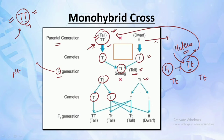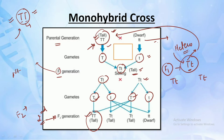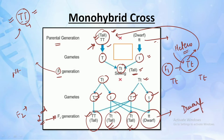When we self capital T small t, the gametes formed would be either capital T or small t from each parent. So in the F2 or second filial generation, we have the following combinations: capital T capital T (tall), capital T small t (tall), capital T small t (tall), and small t small t. Because small t small t is homozygous for the recessive character, it would represent the dwarf type of offspring. These are the four offspring produced in the F2 generation.